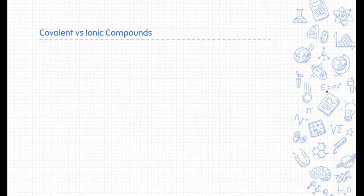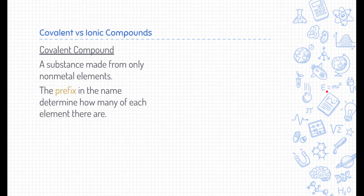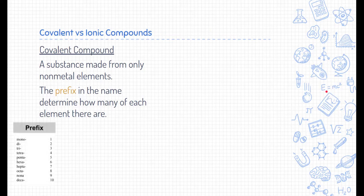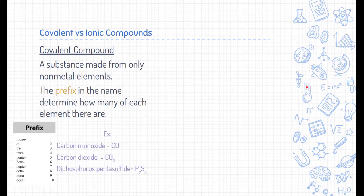So let's talk about compounds. Compounds are just two or more different types of elements stuck together. One type is a covalent compound — a substance made of only non-metal elements. When we know that, we can determine how many of each element there are based on the prefix in the name of a covalent compound. Here are the list of prefixes, which are also found on your periodic table, and here are some examples to go along with that.